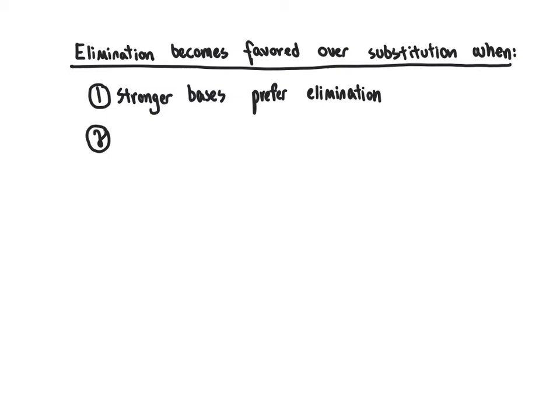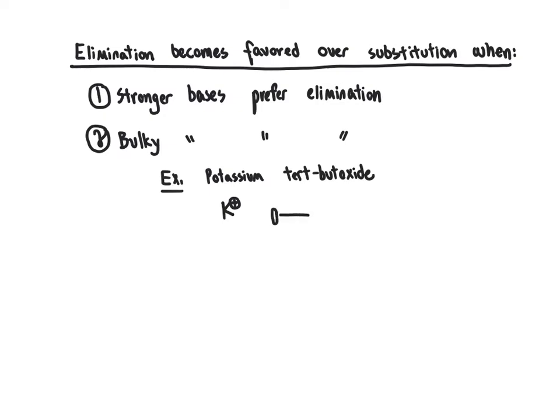The second criterion is that if the base is quite bulky, it will very often be poorly able to act as a nucleophile and will instead favor grabbing a beta proton to give elimination. So bulky bases are going to prefer elimination. For example, consider potassium tert-butoxide: K⁺ as the cation, with an oxygen atom bonded to a tert-butyl group as an anion to counterbalance the positively charged potassium.